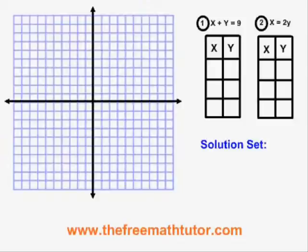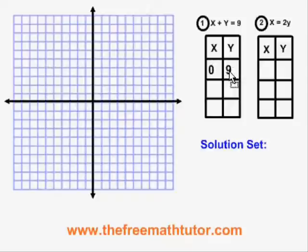For my first line, x plus y equals 9, I'm going to find the intercepts. If x equals 0, then y must be equal to 9. If y is equal to 0, then x must be equal to 9.